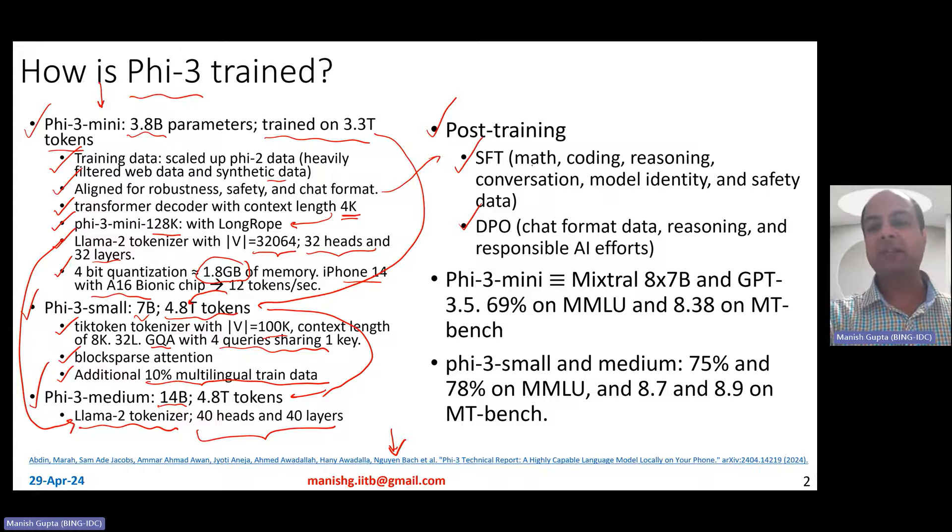They do supervised fine tuning with math, coding, reasoning, conversation, model identity, and safety data. And for DPO, direct preference optimization, they basically make use of chat format data, reasoning, and responsible AI efforts so as to align more closely to how a human would respond to tasks.